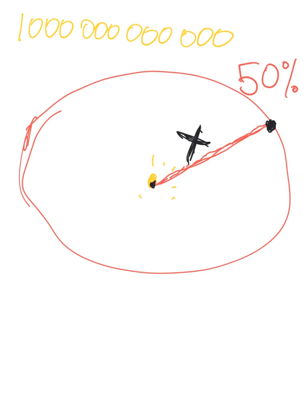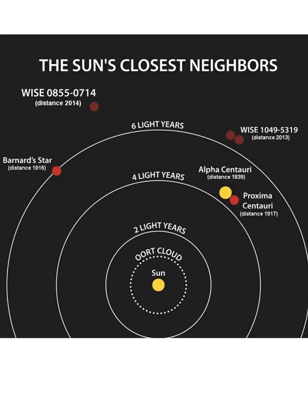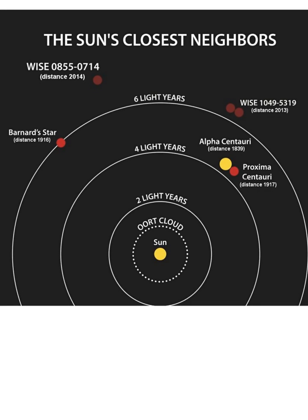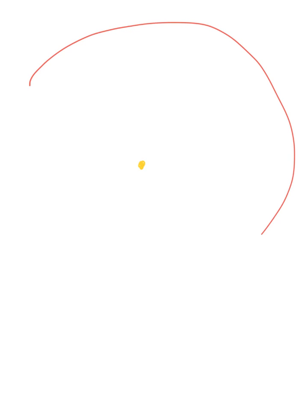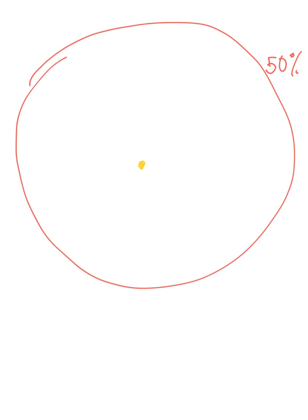Starting with this picture, we have the closest neighbors to our sun. The closest neighbor is of course Alpha Centauri, with Proxima Centauri being the closest, at just over 4.1 light years. That's the distance we assumed when we were trying to find the probability of collision with another star. Today we're going to look at a slightly different situation. This goes back to our geometric and algebraic formulas. We're going to create an imaginary sphere around the sun — this is the sphere with a 50% chance of encountering another star. What we're looking for is this radius, known as x.